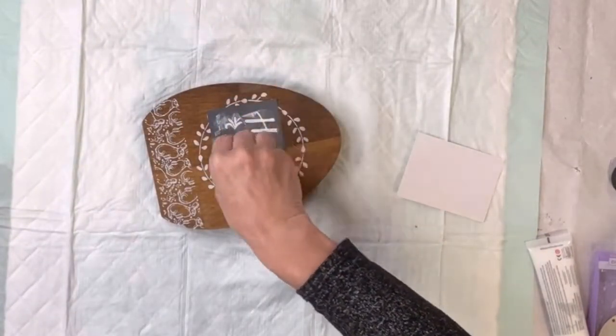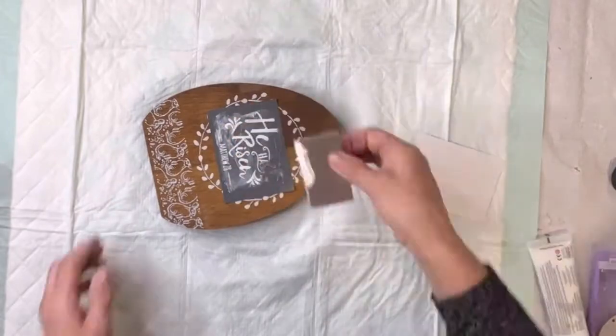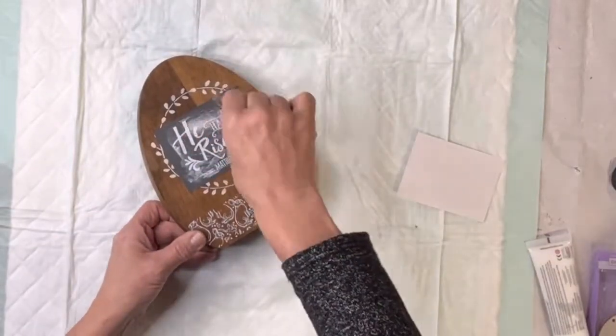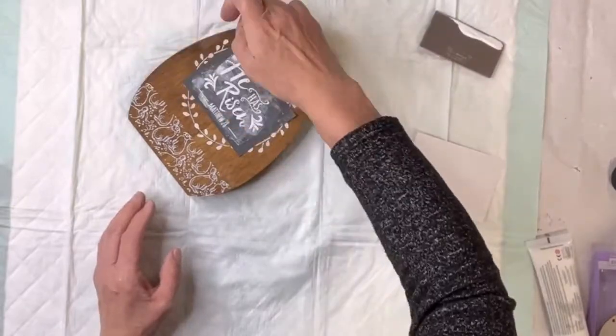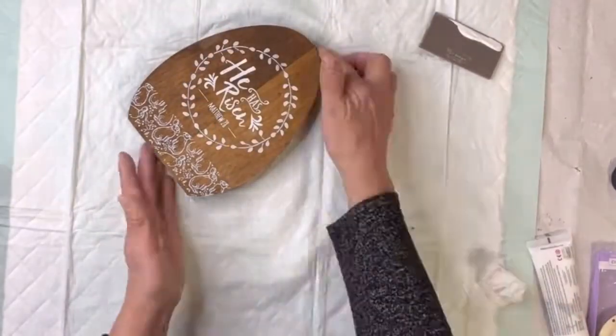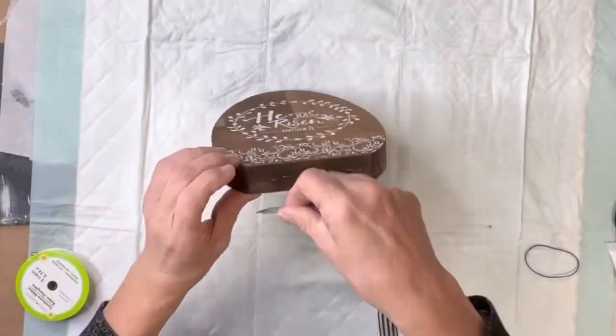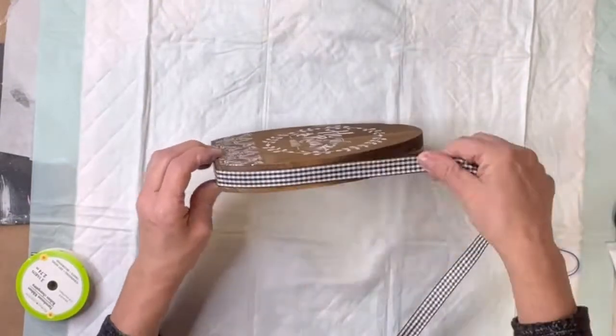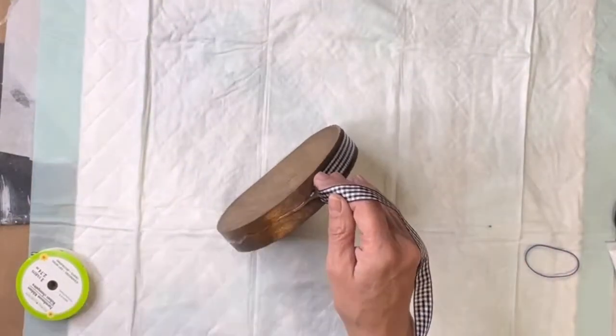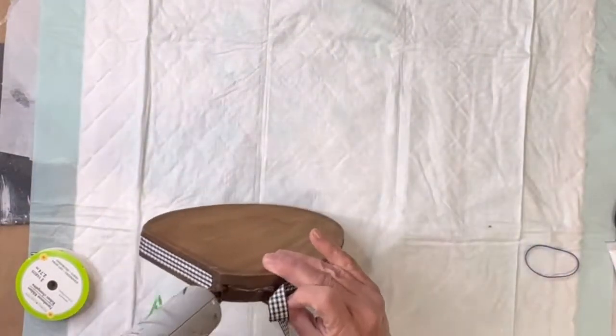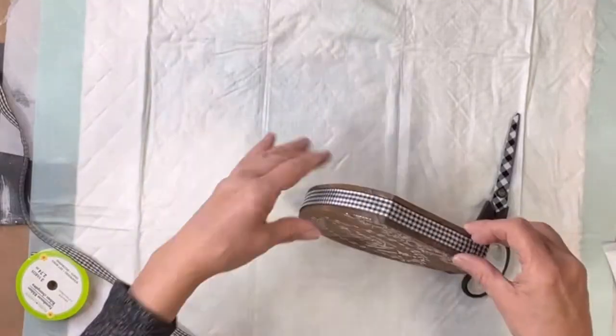You're just going to spread the ink where you want the part of the image that you want white, and then you're just going to lift it. I finished off with a ribbon that I went around the entire egg and then created a bow at the top.